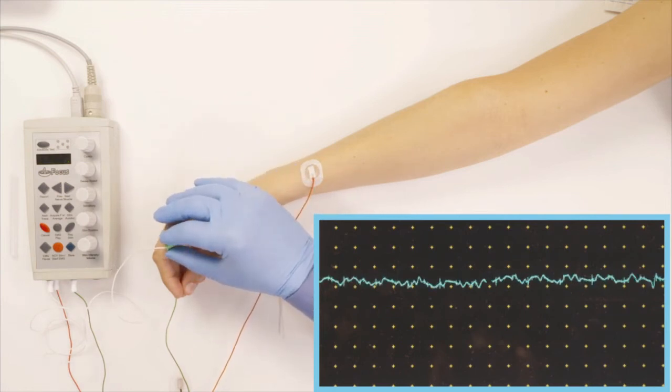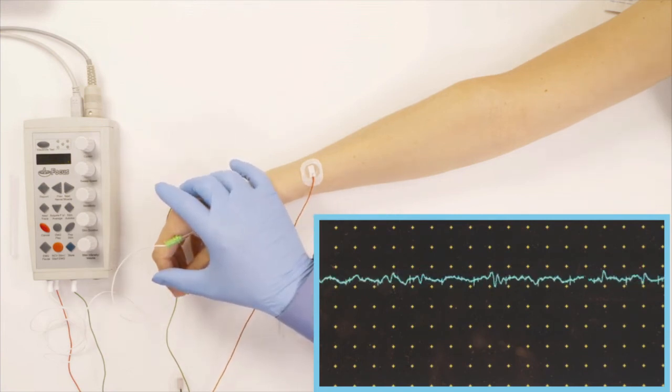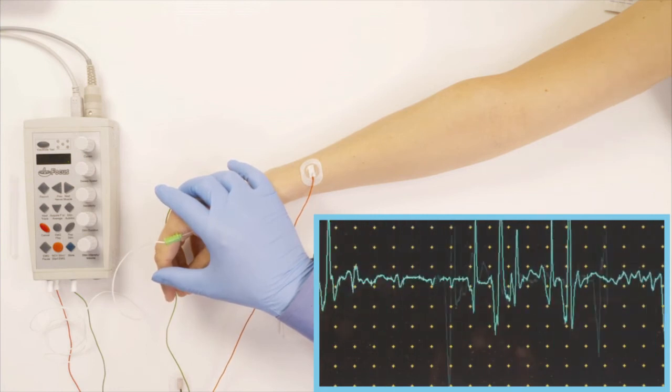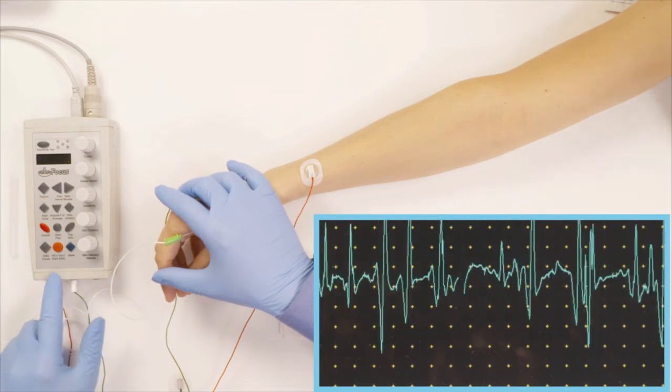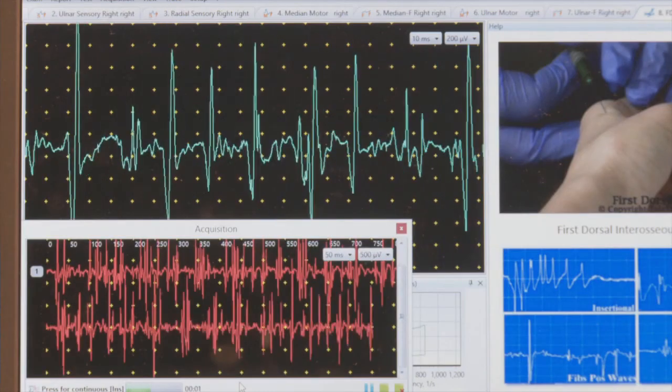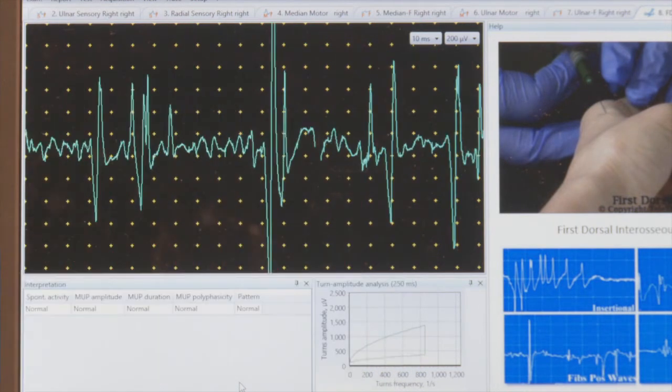So the next thing that I do is I'm going to start looking at activation. I do it at three different levels. I ask her to activate the muscle just a little bit. So pull up just a little bit. That's mild activation. And as soon as I like this mild activation, I start recording this. And here you see this on the screen showing up. As soon as it fills the screen, I press store.